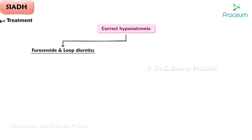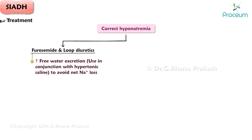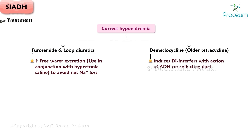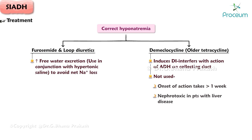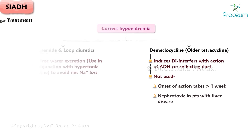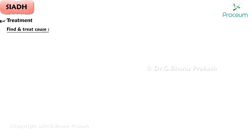Furosemide and other loop diuretics can also be used to increase free water excretion, but should be used in conjunction with hypertonic saline to avoid net sodium loss. Demeclocycline, an older tetracycline, can induce diabetes insipidus by interfering with antidiuretic hormone action on the collecting duct, but is no longer commonly used due to slow onset (over a week), nephrotoxicity in liver disease, and limited availability.